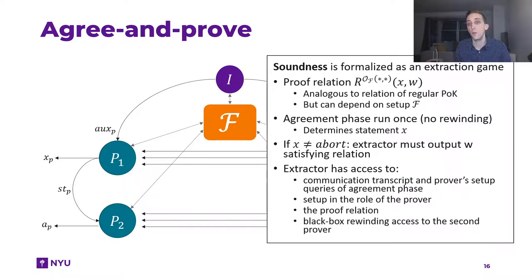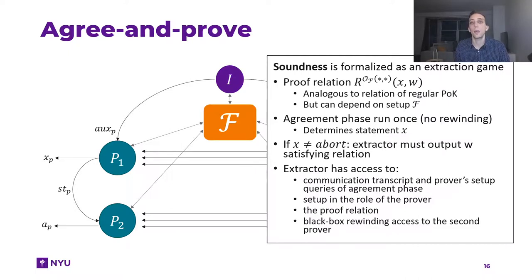In addition, the extractor also gets oracle access to the setup functionality, but here only in the role of the prover — just because the verifier can query something from the setup functionality does not mean the prover knew this value, since prover and verifier may have different views on the setup. Finally, because the proof relation is no longer a public object, we also give the extractor black-box access to the proof relation, so that the extractor knows whether they need to rewind once more or whether they are done. Obviously you can tweak our notion by not giving the extractor this access, and there are many different variants, but what we put forward makes sense for most applications.